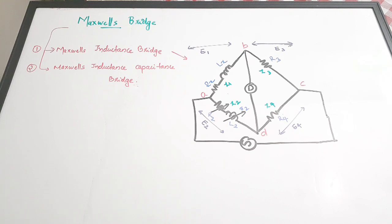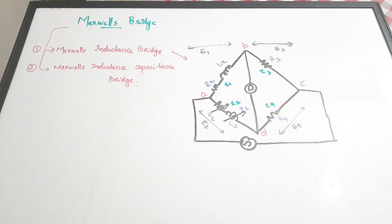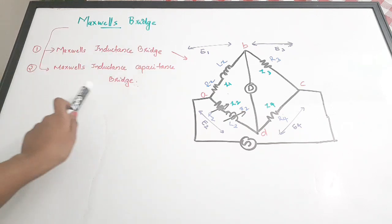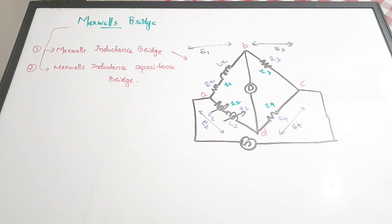The Maxwell's bridge is used for measuring unknown inductance. The Wheatstone bridge is generally used for measuring unknown resistance, whereas the Maxwell's bridge is used for measuring unknown inductance. There are basically two types: Maxwell's inductance bridge and Maxwell's inductance capacitance bridge. The figure drawn here is a Maxwell's inductance bridge, which we'll discuss first, followed by the Maxwell's inductance capacitance bridge.